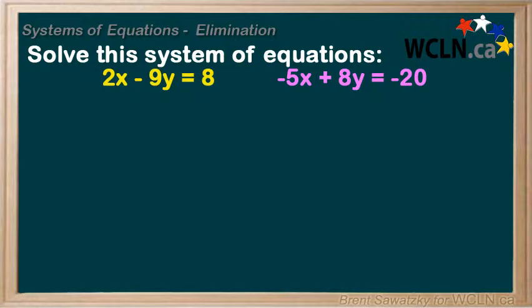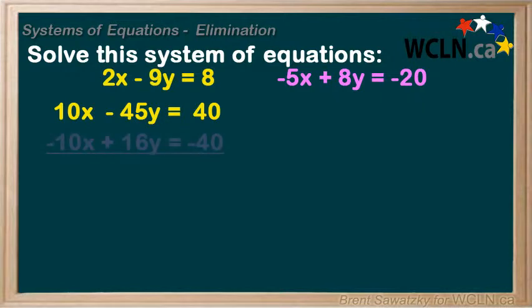The first equation multiplied by 5 gives us 10x minus 45y equals 40. We multiplied every term in the equation by 5, so it's the same equation. The second equation multiplied by 2 gives us negative 10x plus 16y equals negative 40. Again, we multiplied every term by the same thing — we kept the equation balanced.